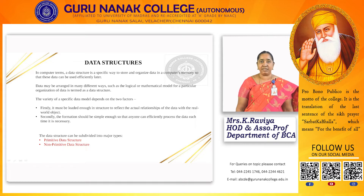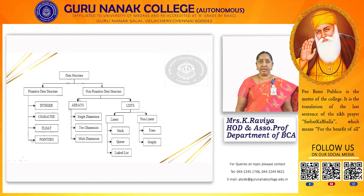Usually for a data structure, it is subdivided into two major types: primitive and non-primitive data structures. For primitive data structures, it may be an integer, char, float, or pointers.